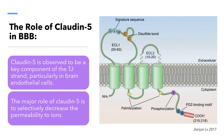Claudin-5 has been reported to play a pivotal role in BBB integrity and permeability. As you can see, claudin-5 is observed to be a key component of the tight junction strand, particularly in brain endothelial cells. The major role of claudin-5 is to selectively decrease the permeability to ions.